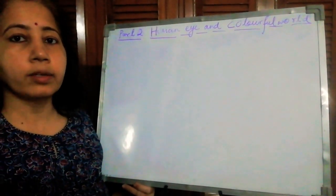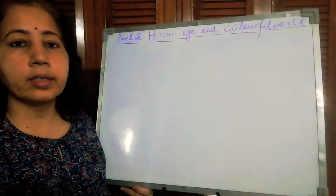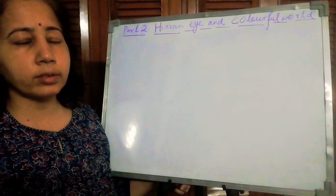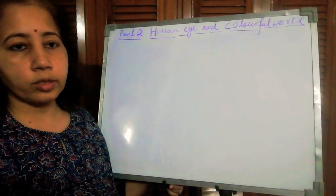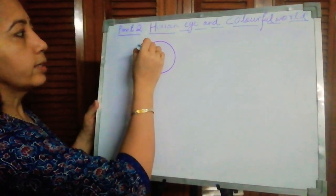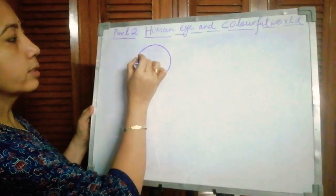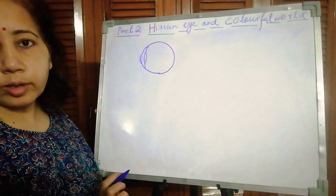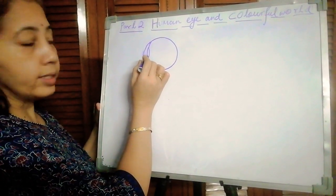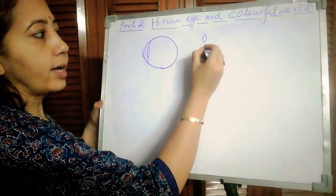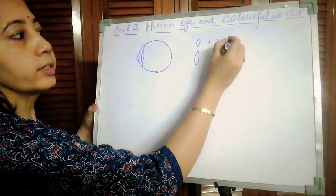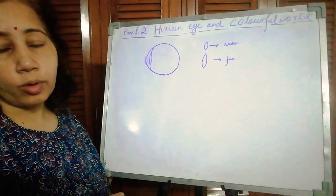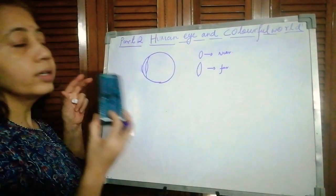Hello students, this is Part 2 of the online session on Human Eye and Colorful World. In the previous session we covered the power of accommodation. Now in this session we will go through the defects of vision. To revise: our eye is ball-shaped and the crystalline lens, supported by ciliary muscles, accommodates itself when looking at nearby or far objects. If this adjustment does not happen, that is called a defect of vision.